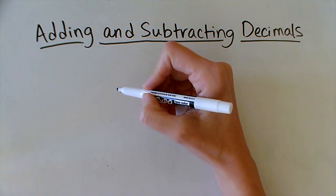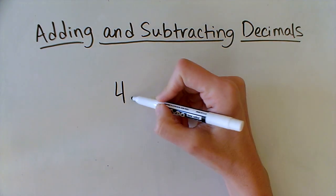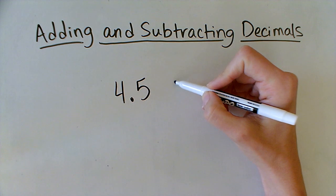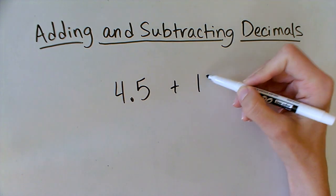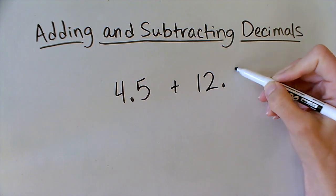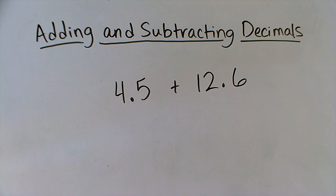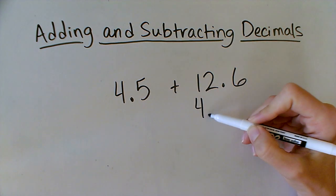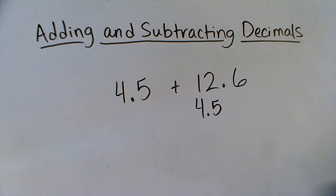For example, if I wanted to add 4.5 plus 12.6, I would need to make sure that my numbers stayed lined up. I couldn't write 4.5 like this,